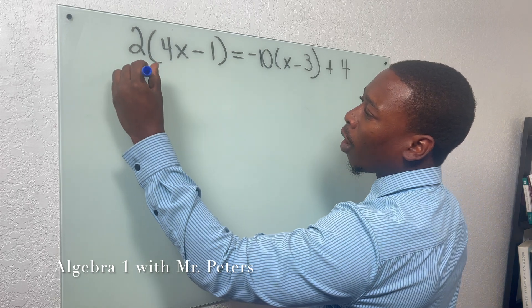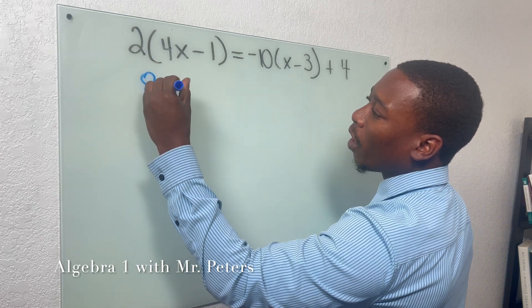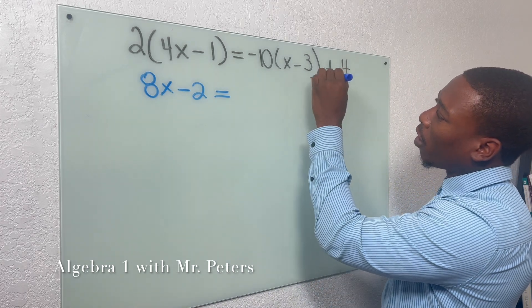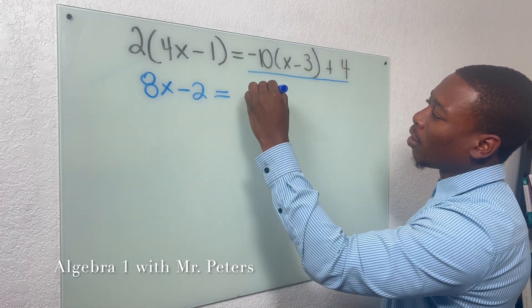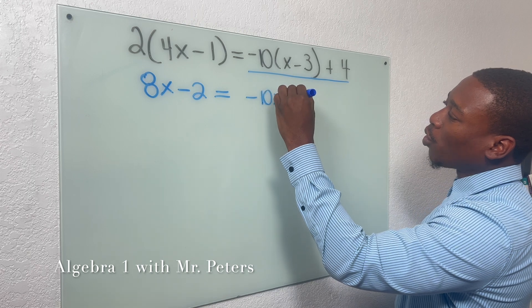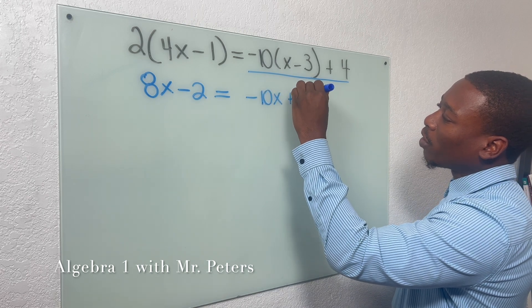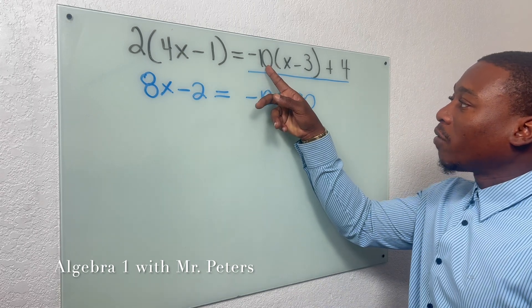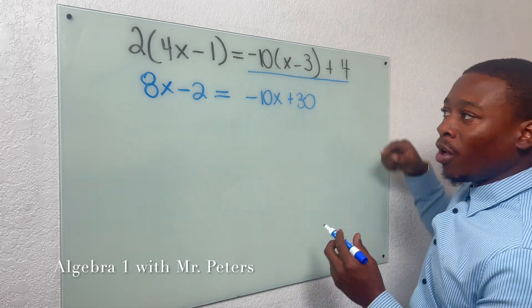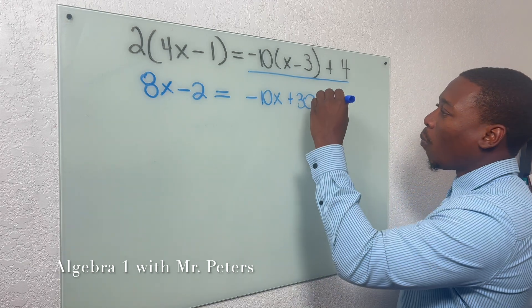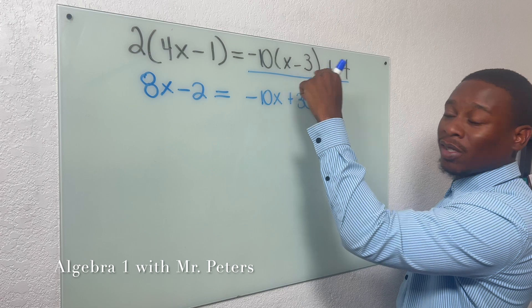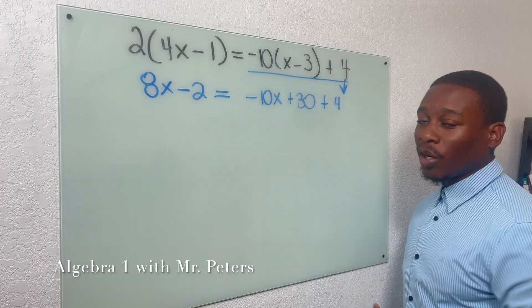But one common error that I see students make when they're distributing occurs in a problem like this. So after they distribute and they get negative 10x plus 30, they sometimes think that they're supposed to take negative 10 and also distribute it to 4. But that's wrong. Remember, we only distribute to what is inside the parentheses. So 4 is going to stay the same and it comes down.